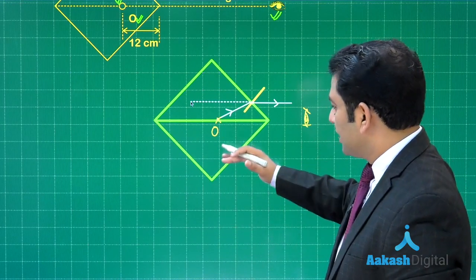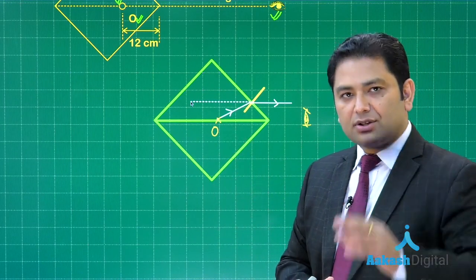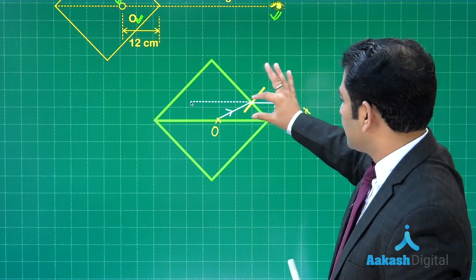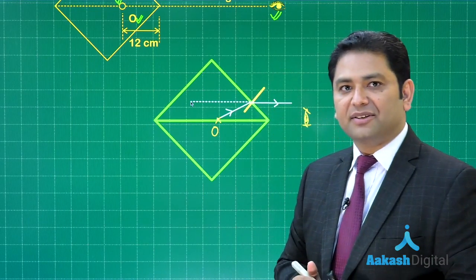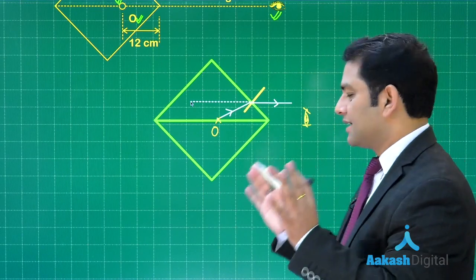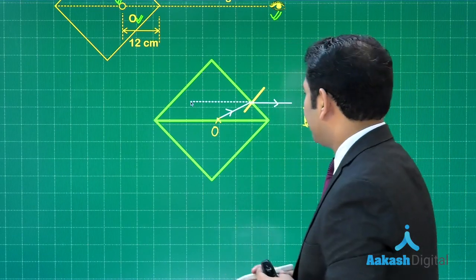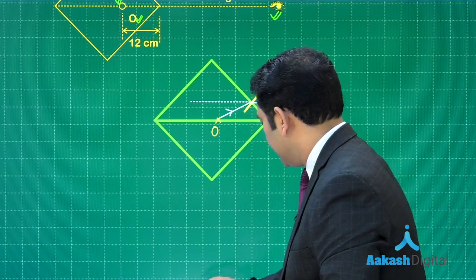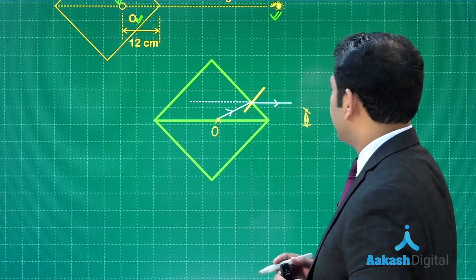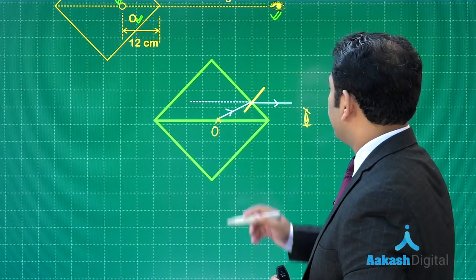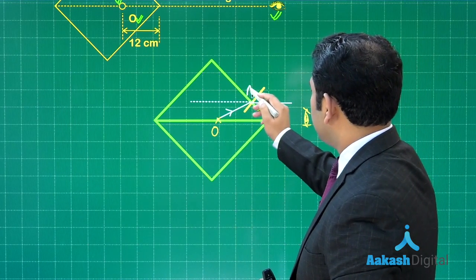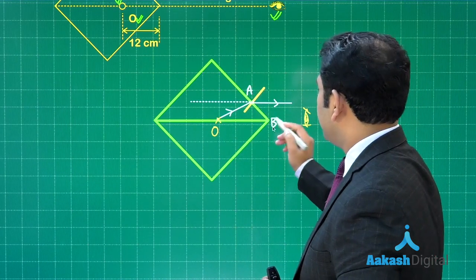The same thing happens in the below surface as well, so distance between the two images is this y distance. That's all I need to calculate. Let me name this as O, call this as A, and this as B.